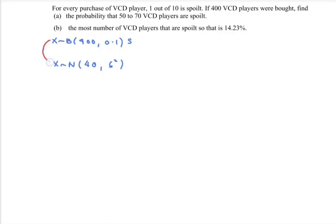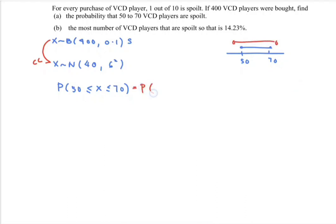From discrete to continuous, we have to make some continuity correction. The question asks to find the probability that 50 to 70 VCD players are spoiled, so P(50 ≤ X ≤ 70). For the continuity correction, referring to the number line with 50 and 70, the correction gives us P(49.5 < X < 70.5).